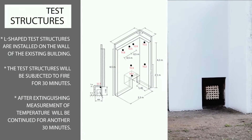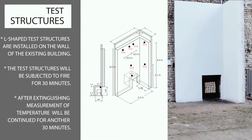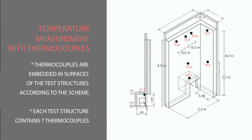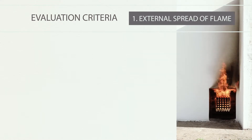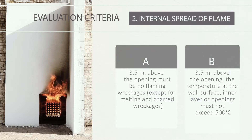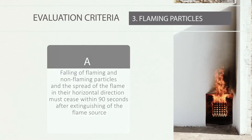L-shaped test structures are completely installed on the wall of the existing building. Test pieces are subjected to fire for 30 minutes. After extinguishing, temperature measurement continues for another 30 minutes. Thermocouples are embedded in surfaces of the test structure. For external spread of flame assessment, at 3.5 meters above the opening there must be no flaming wreckages, no temperature exceeding 500°C, and no continuous burning. For internal spread of flame, at 3.5 meters above the opening there must be no flaming wreckages and no temperature exceeding 500°C. Flaming or non-flaming particles must cease falling within 90 seconds after the flame source is extinguished.